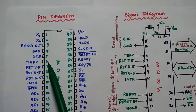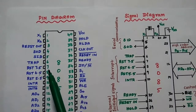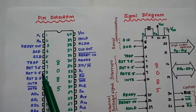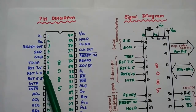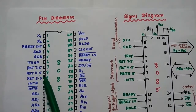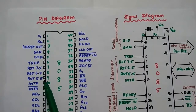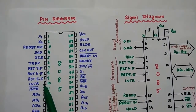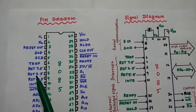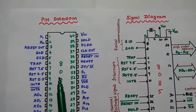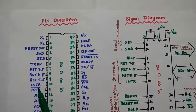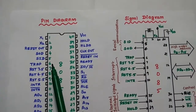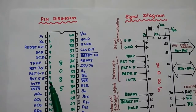The next 5 pins, 6 to 10, are used for interrupts. The 8085 has 5 interrupts: Trap, RST 7.5, RST 6.5, RST 5.5, and INTR. Here RST represents restart for this microprocessor, and INTR means interrupt request. The 5 interrupts are located at pins 6 to 10.